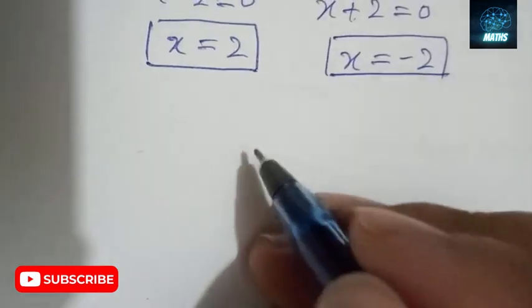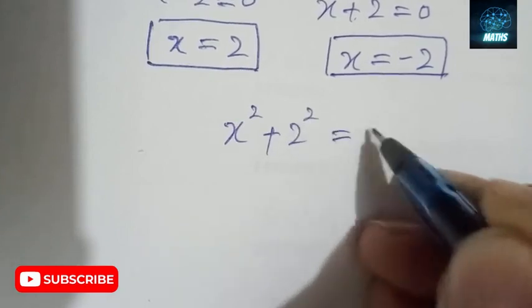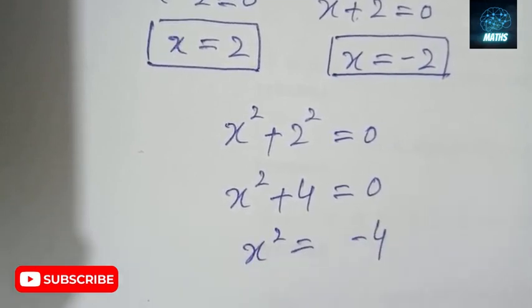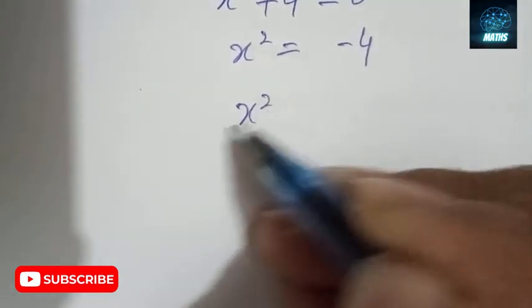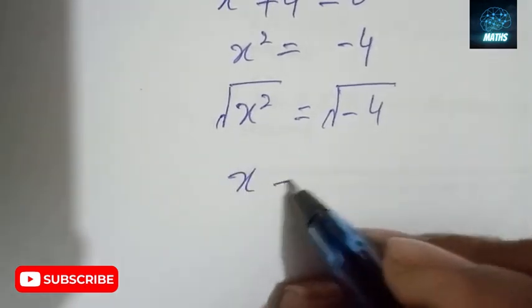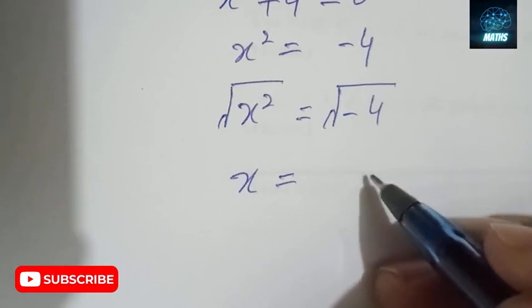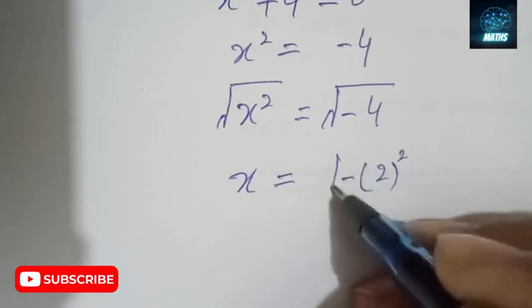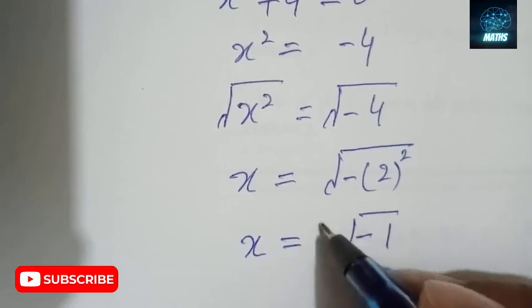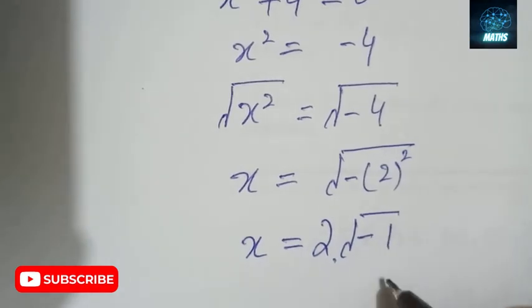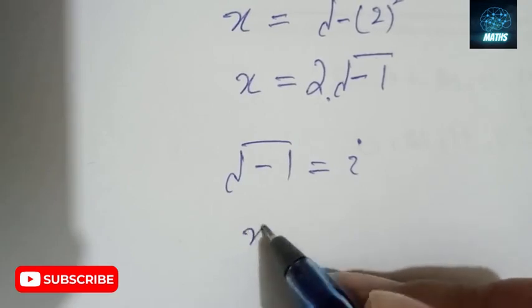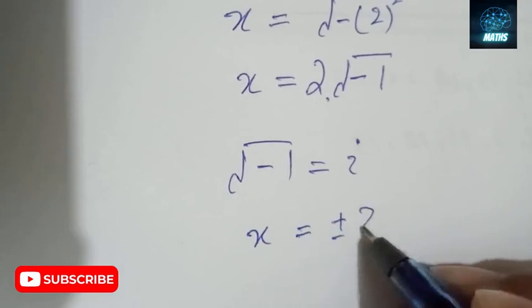Now we solve X² + 4 = 0, which gives X² = -4. Taking the square root on both sides: X = ±√(-4). Since √(-1) = i (iota), this gives X = ±2i.